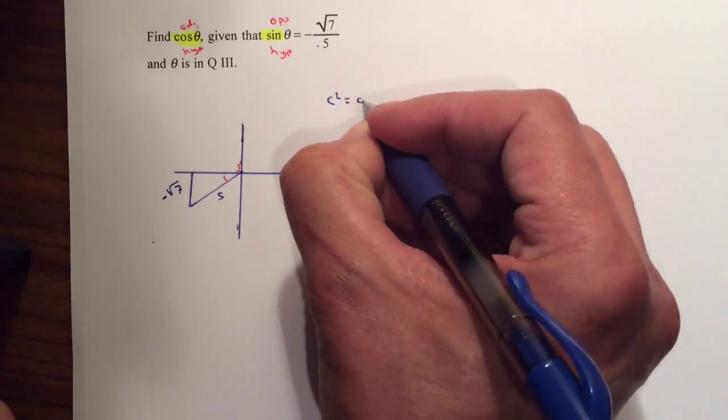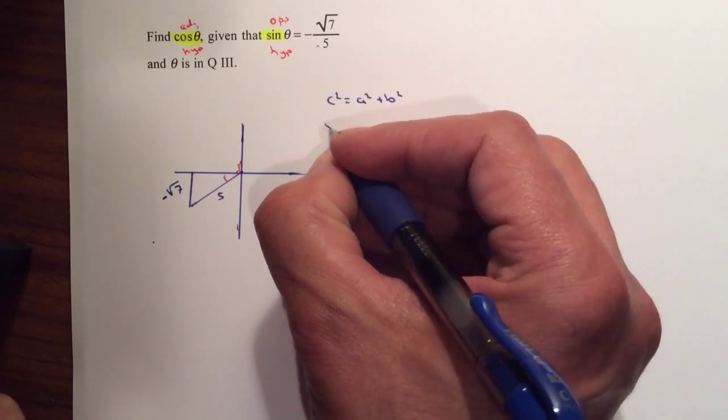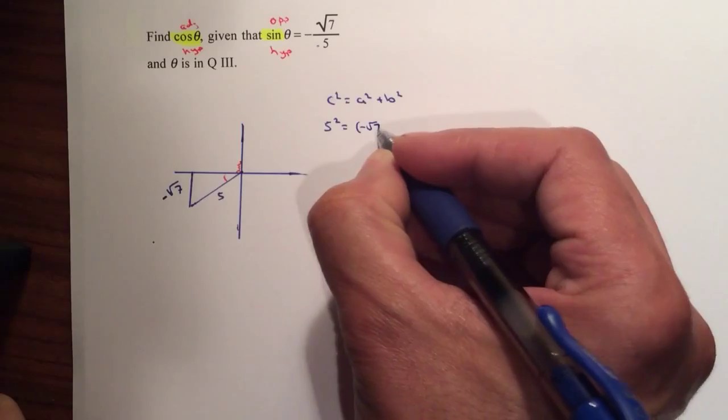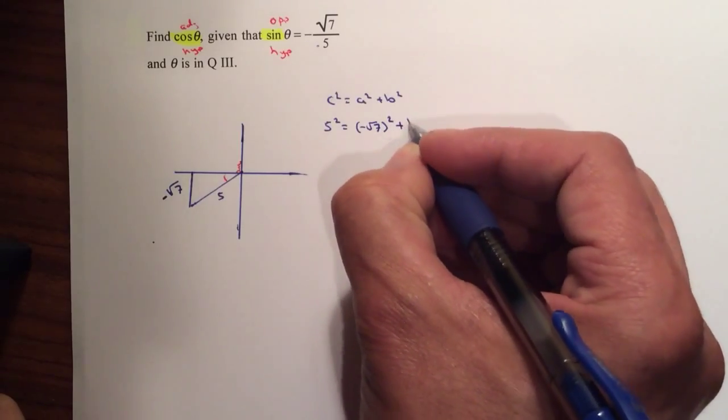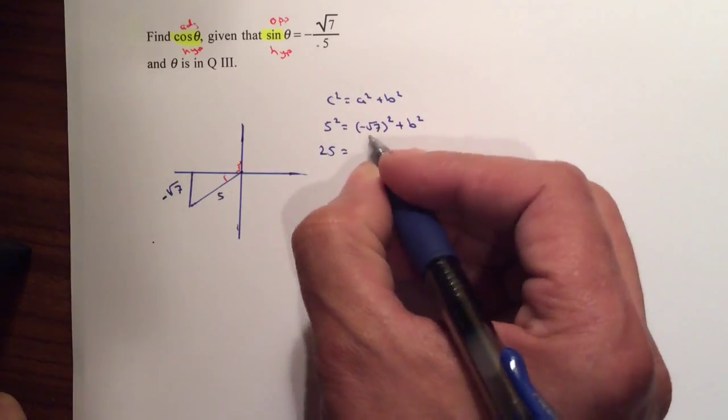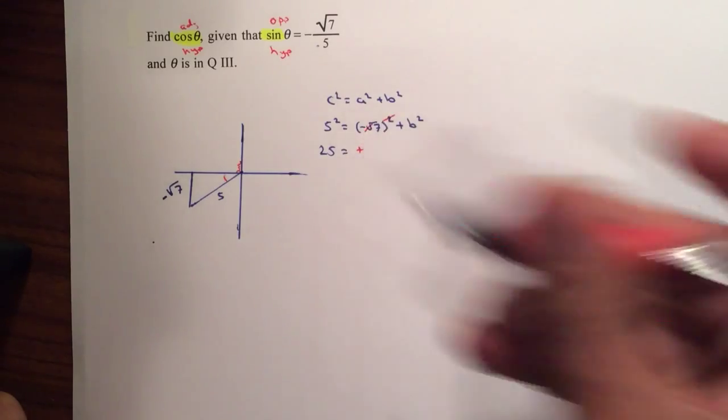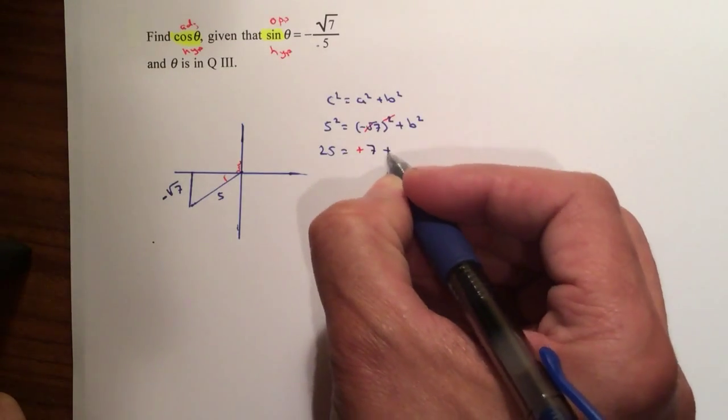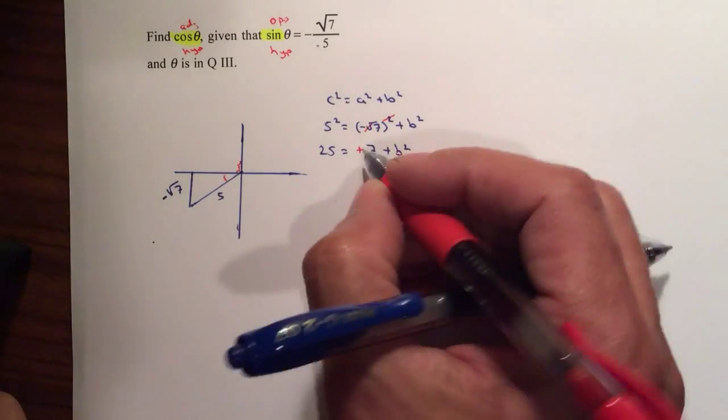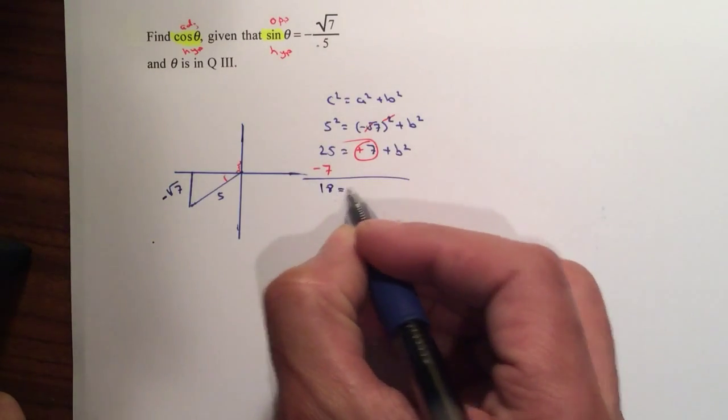C squared is equal to A squared plus B squared, where C is your hypotenuse, which is 5 squared. A, we're going to have that be negative square root of 7 squared plus B squared. 5 squared is 25. Negative squared is going to be positive. Square root and the square cancel, so that gives me 7 plus B squared. And now I'm just going to solve for B. Move the 7 to the left, we're going to say negative 7. That gives me 18 is equal to B squared.